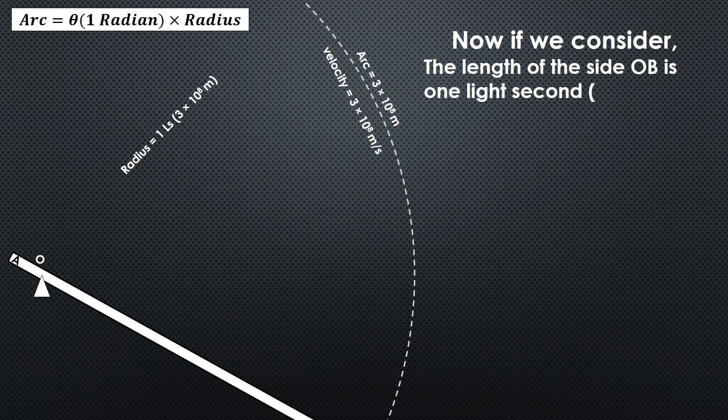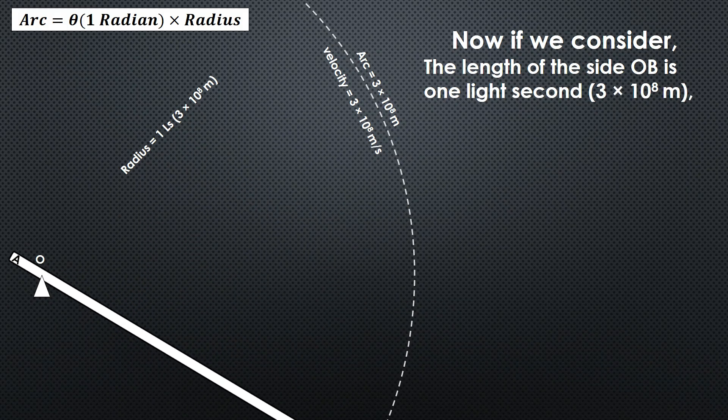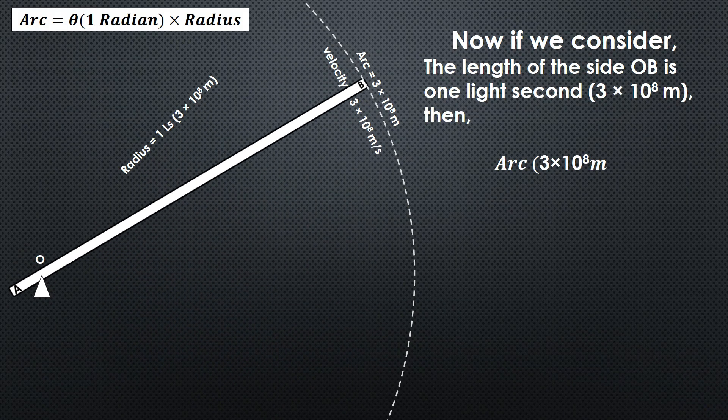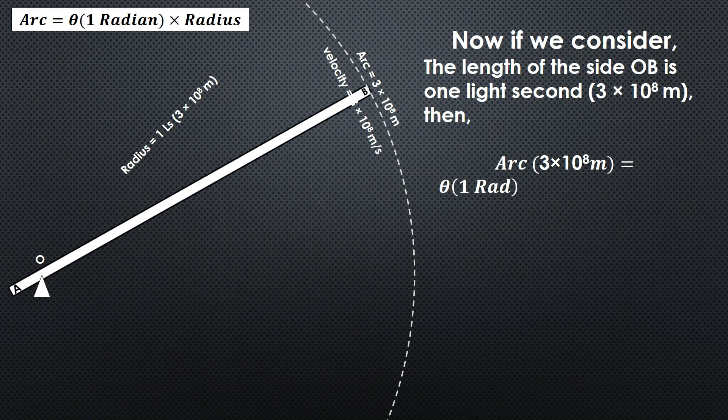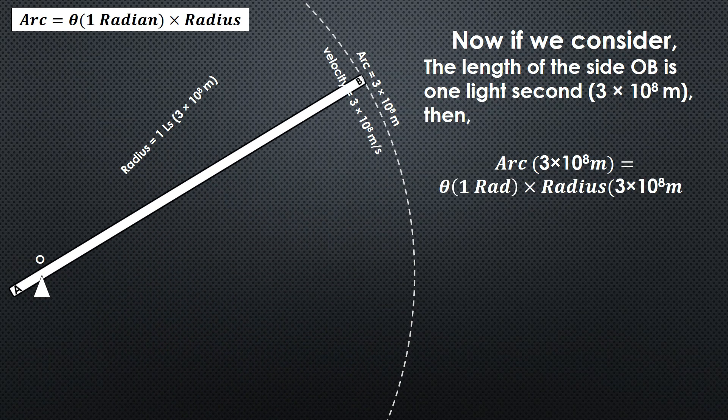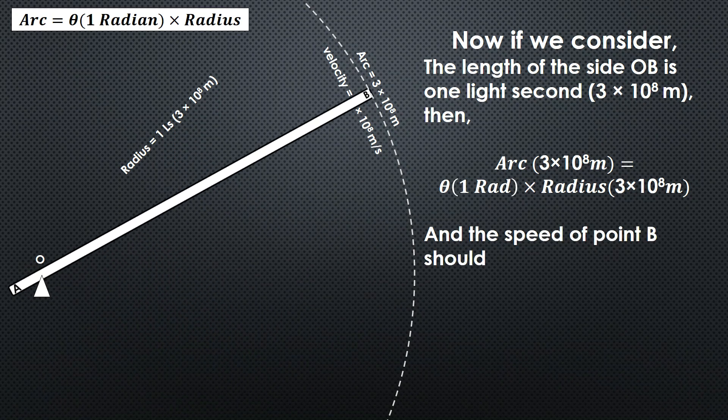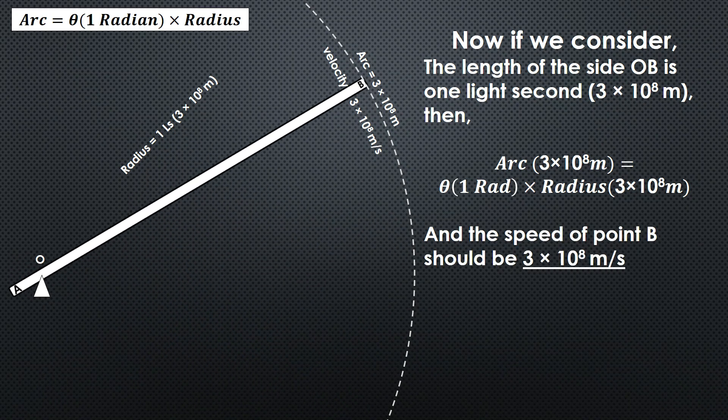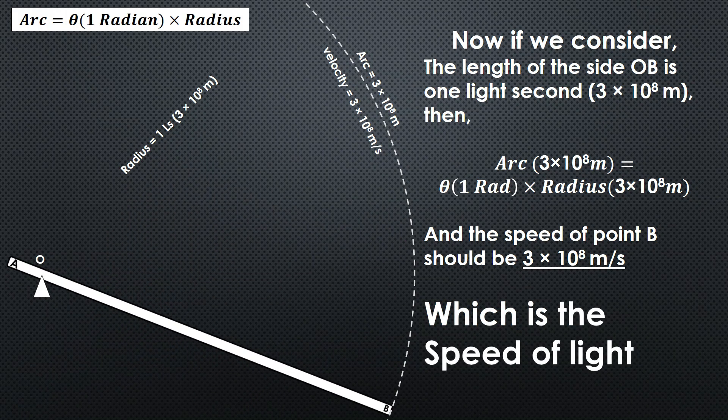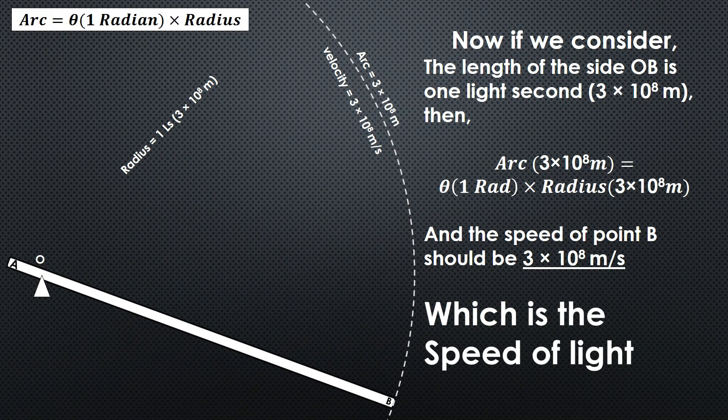Then what would happen? Then the length of the arc will also be 3 times 10 to the power 8 meters. In this way, if it takes 1 second for one oscillation, then the speed of point B will be 3 times 10 to the power 8 meters per second, which is the speed of light.